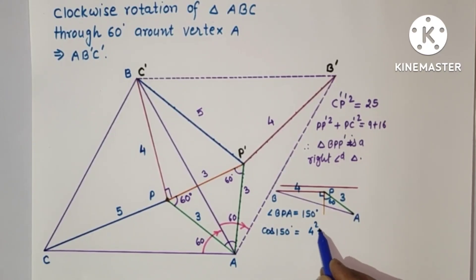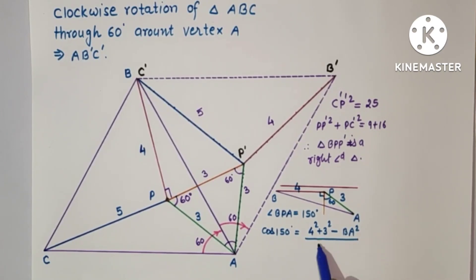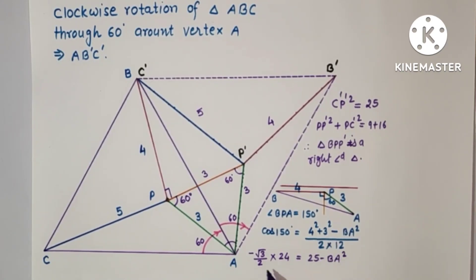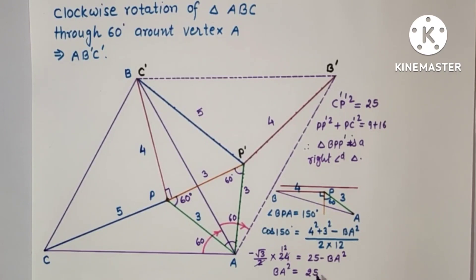Using the cosine rule: cos(150) equals (PB² + PA² − BA²) divided by (2 × PB × PA), which is (16 + 9 − BA²) divided by 24. cos(150) equals cos(180 − 30), which is minus cos(30), which equals minus root 3 over 2. So minus root 3 over 2 times 24 equals 25 minus BA squared. Rearranging, BA squared equals 25 plus 12 root 3.